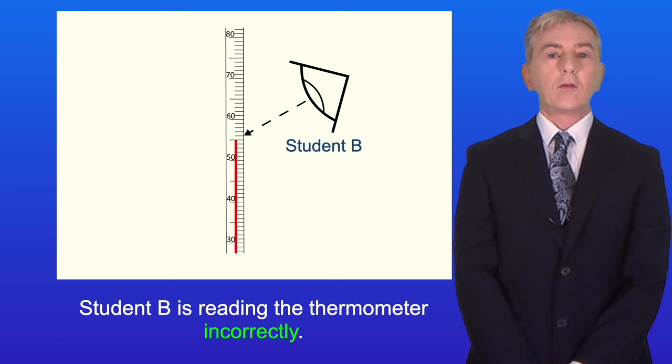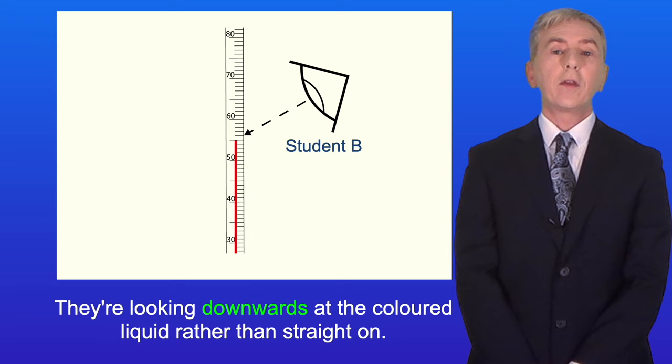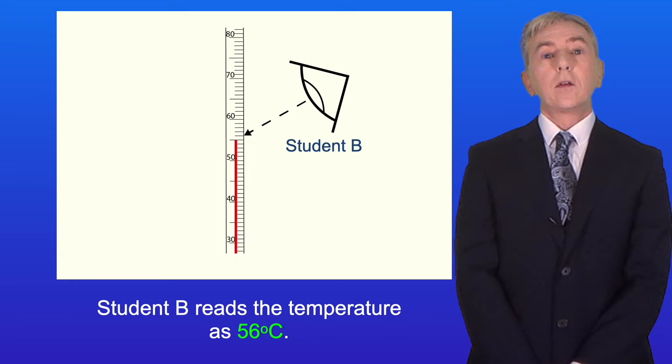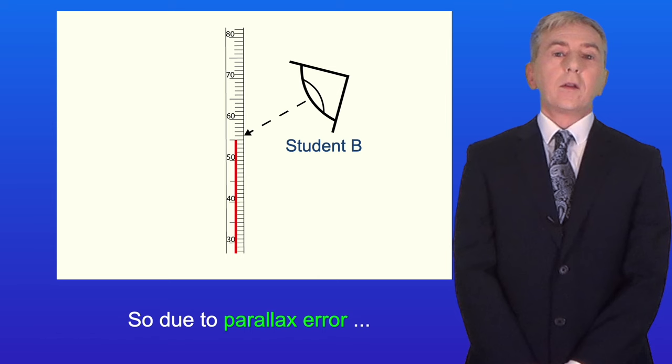Student B is reading the thermometer incorrectly. They're looking downwards at the coloured liquid rather than straight on. Scientists call this a parallax error. Student B reads the temperature as 56 degrees Celsius. So due to parallax error, student B's reading is less accurate than student A's.